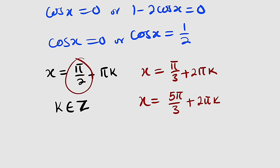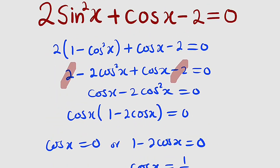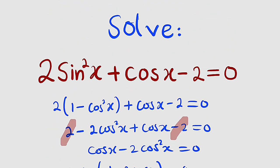X could either be equal to pi divided by 2 plus multiples of pi. X can also be equal to pi divided by 3 or 5 pi divided by 3 plus multiples of 2 pi. Thank you for watching. Do share to your learning colleagues, and don't forget to subscribe to my YouTube channel for more exciting videos. Bye-bye.